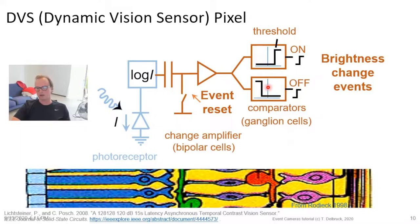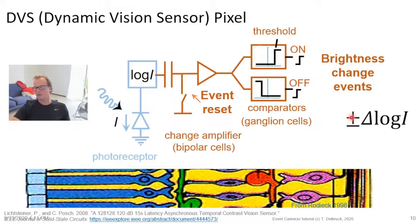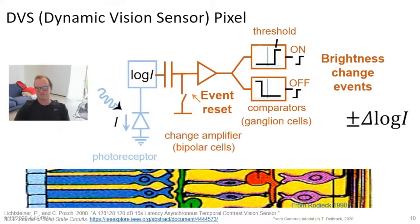That is driven into two comparators mimicking the ganglion cells that detect on and off brightness changes. When the change amplifier is reset, its output sits at a baseline; the comparators detect whether the signal went up past an on-threshold or down past an off-threshold. The pixel thus generates asynchronous on or off brightness change events — there's no clock. These events represent plus or minus Δlog(I), where Δ is the threshold in log intensity change. When the pixel outputs this event, the pixel address and sign of the brightness change are sent out, and the pixel is reset.